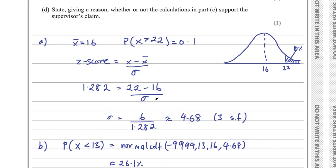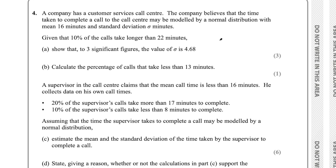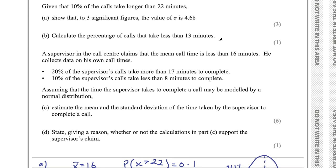We found the probability below 13 minutes — the area on the normal distribution below 13. That gives 26.1%. That was part B.